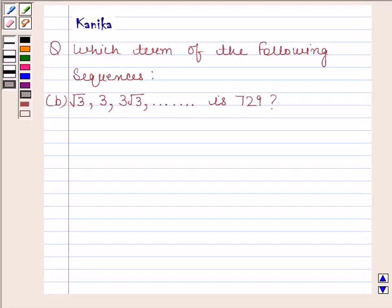Hi, I'm Kanika and I'm going to help you to solve the following question. The question says, which term of the following sequences, B part is, root 3, 3, 3 root 3 is 729.